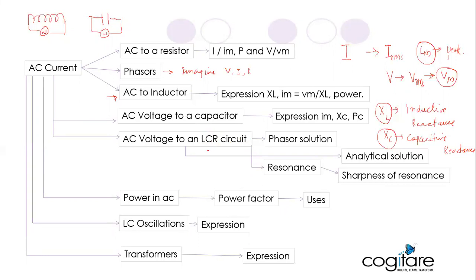We will approach the LCR circuit in two ways: a phasor solution and an analytical solution. We will also look into a very important aspect called resonance — what resonance means in an LCR circuit — and from there discuss sharpness of resonance, power factor, and uses of AC current.